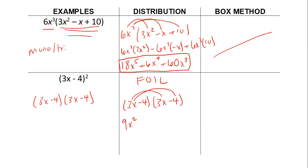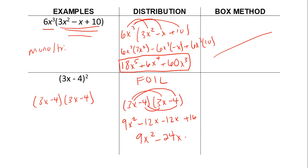My outside, 3x times negative 4 gives me negative 12x. My inside gives me negative 12x. And then my last terms give me positive 16. So that's 9x squared minus 24x plus 16.